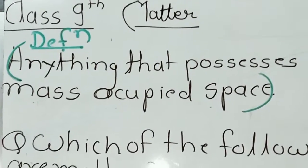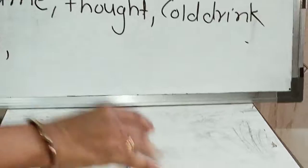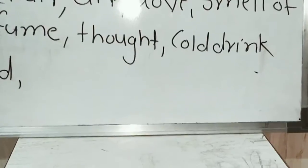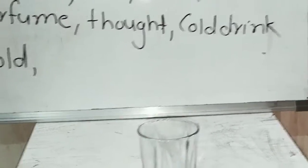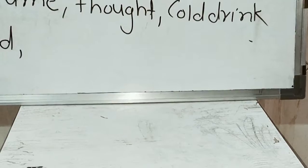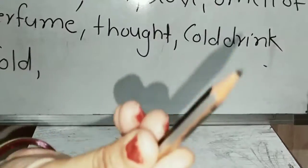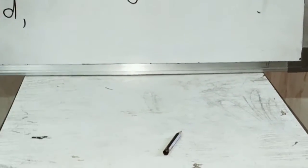We perform activity number one. In this activity — what is this? It has some mass, it occupies some space. Yes, this is an example of matter. A simple glass has some mass and occupies some space — example of matter. A piece of pencil has some mass and occupies space — example of matter.